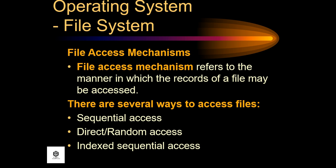File access mechanisms refer to the manner in which the records of a file may be accessed. There are several ways to access files: sequential access, direct or random access, and index sequential access.